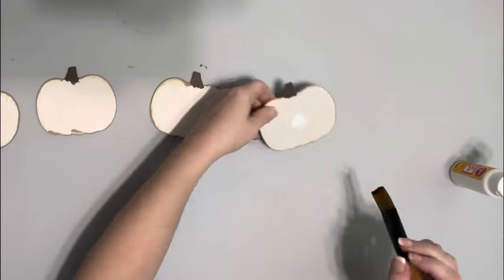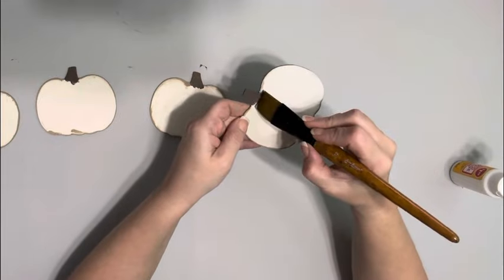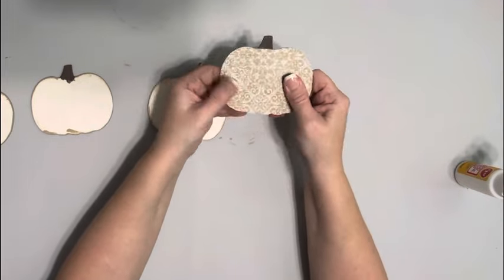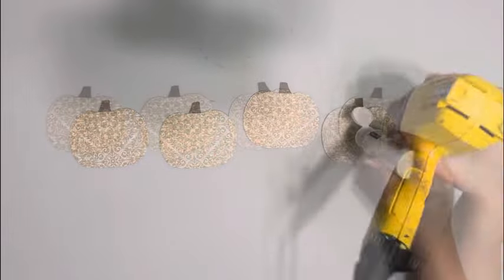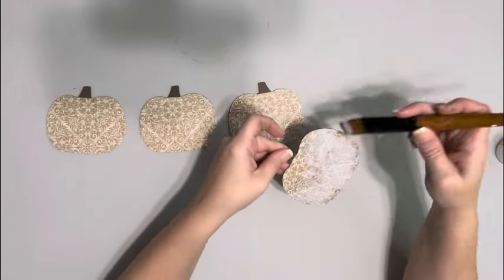After those are dry, I take Mod Podge and brush on a layer of that on the front of the pumpkins. I don't cover the stem with the Mod Podge, just the pumpkin. Place down the scrapbook paper and smooth it out with my hands. I do that to all four and make sure that layer is completely dry, and then add a layer of Mod Podge on top of the paper.